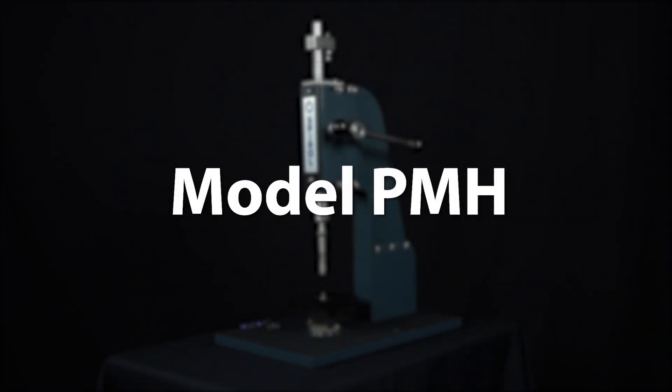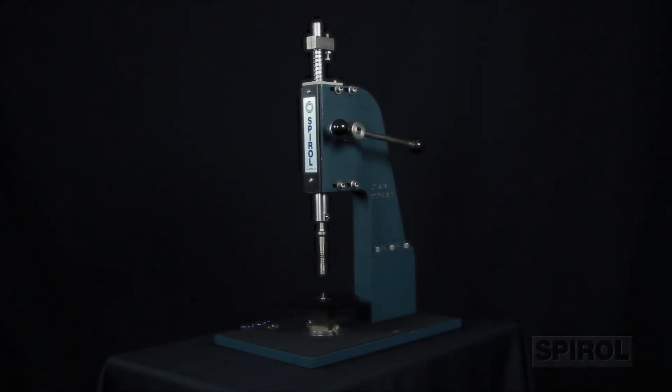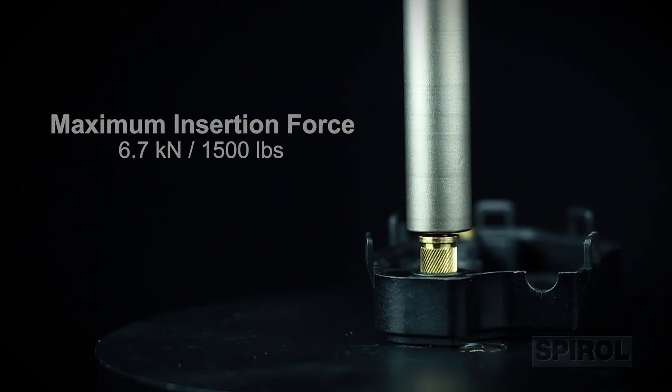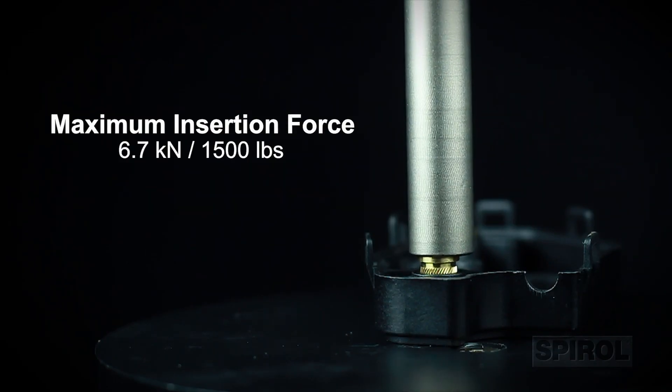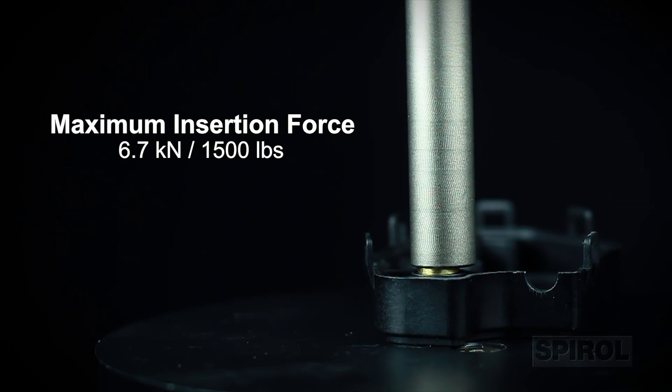Introducing Spiral's model PMH vertical manually operated installation machine. The maximum insertion force of the PMH is 6.7 kilonewtons or 1,500 pounds.